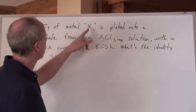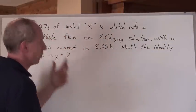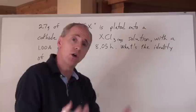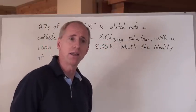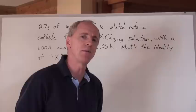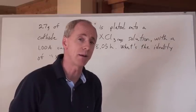2.7 grams of metal X is plated onto a cathode, so you don't know what the metal is but you know it's plated from a solution that's XCl3. Okay so that tells you something about the identity of the ion that you're zapping, doesn't it?